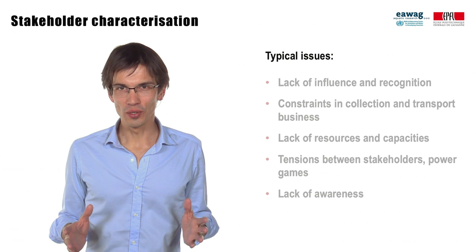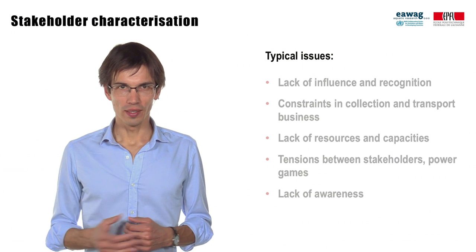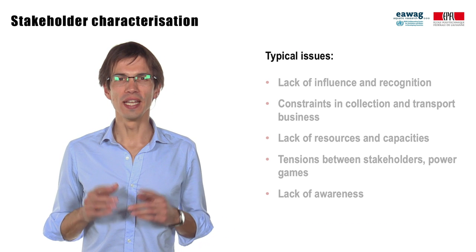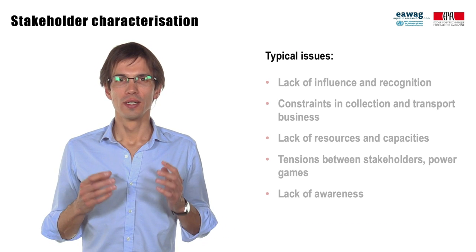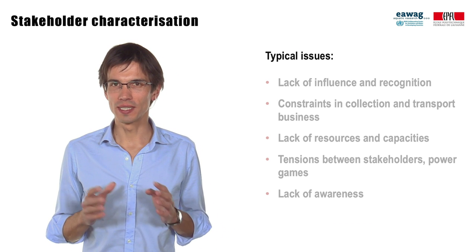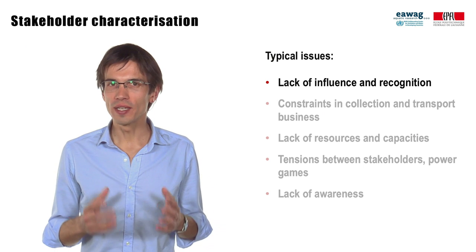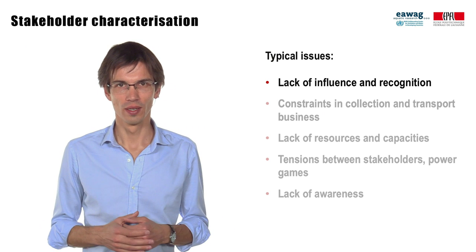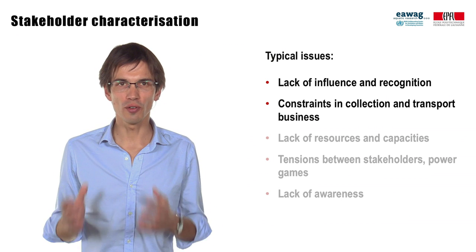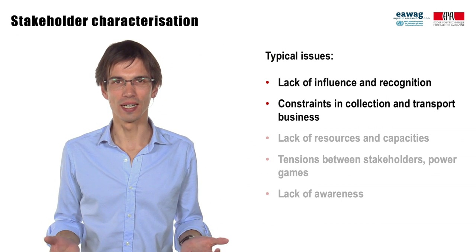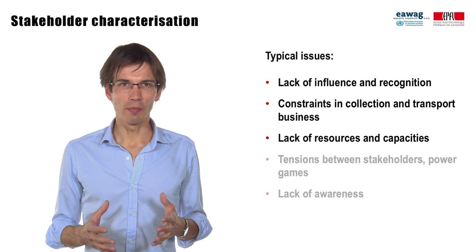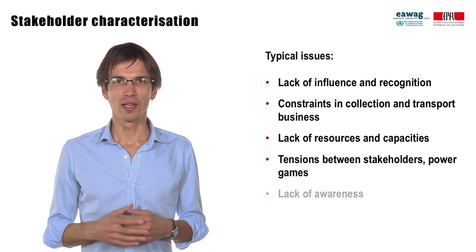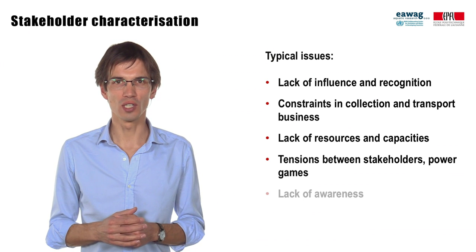Once we identify the stakeholders, we need to characterize them. In particular, we want to make sure to identify all potential supporters and opponents of the project, and any vulnerable group that may not be given a voice. Typical problems faced by fecal sludge management stakeholders are a lack of influence and recognition. Think, for example, of manual emptiers, who typically operate illegally and even at night to avoid being seen. For the mechanical emptiers, you have issues such as the cost of transport, traffic, or the lack of dumping sites. Lack of resources and capacities is often a problem at institutional level. You may also observe tensions between stakeholders, like power games between institutions or competition between private service providers.